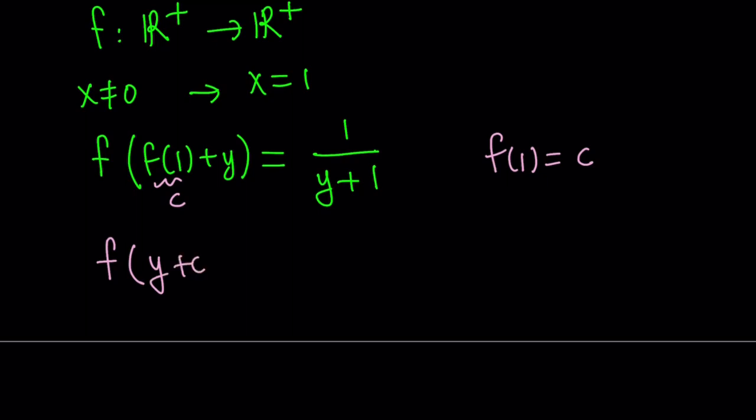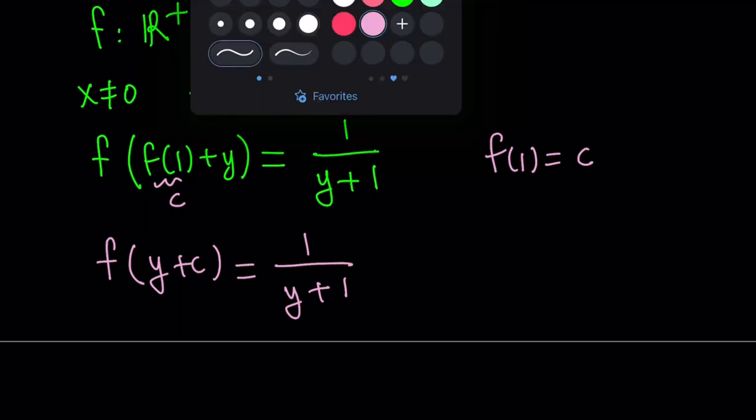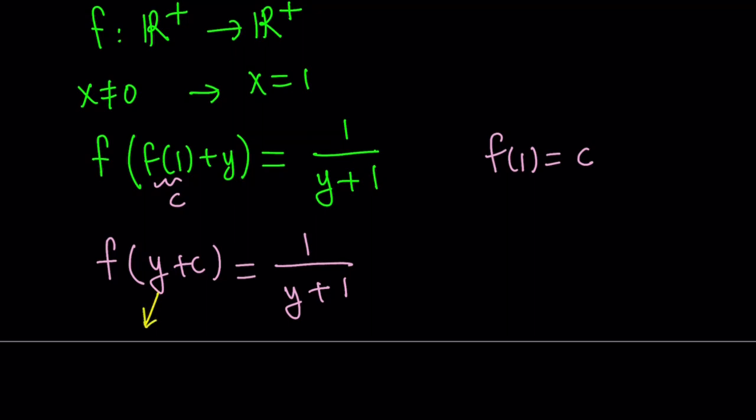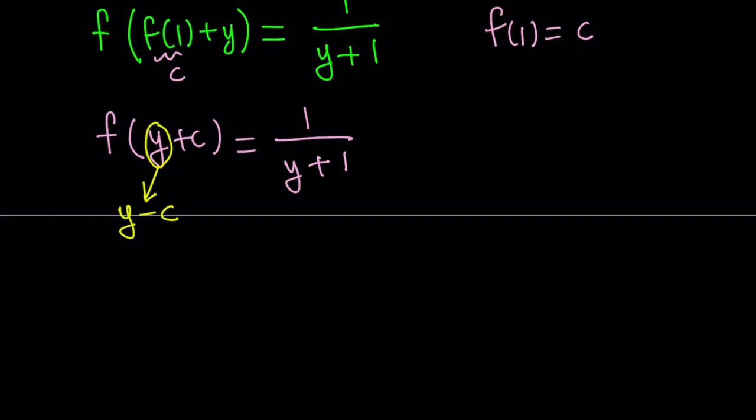Let's write it this way: f(y + c) = 1/(y + 1). This is nice because we didn't get something for f(y), but we're almost there. The next thing we can do is replace y with something. Since we have y + c, it makes sense to replace y with y - c, because y - c + c = y. Can I replace y with y - c? Of course you can, because these are dummy variables. We can replace any variable with another variable, as long as we're not violating the conditions.